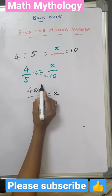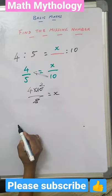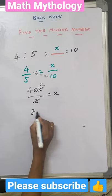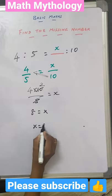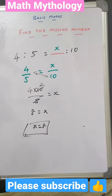We know 5 gets cancelled 2 times with 10. So we get 4 into 2 is 8. So your x is 8. So this is the answer.